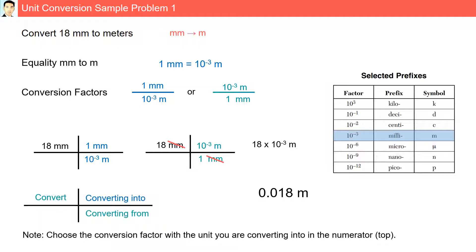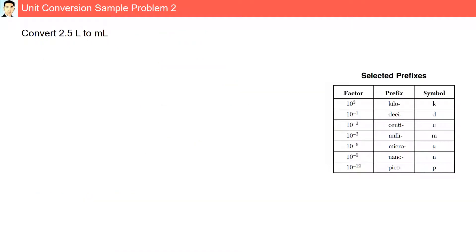For example, whatever you want to achieve should be at the top in the conversion factor. Practice problem 2: Convert 2.5 liters to milliliters. Here we are going from liters to milliliters. Our equality would go from 1 milliliter is equal to 10 to the minus 3rd liter.